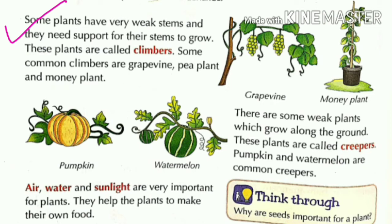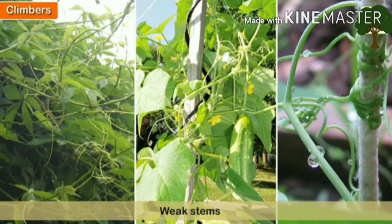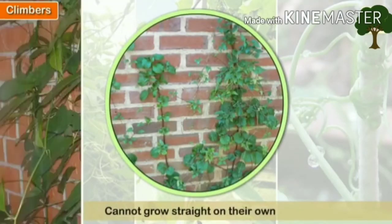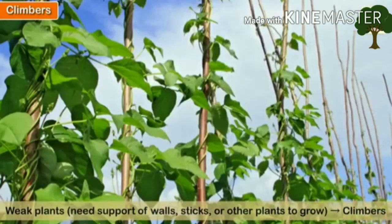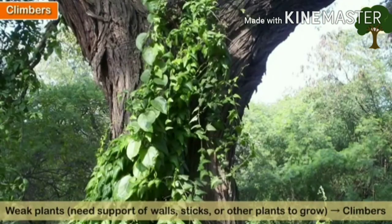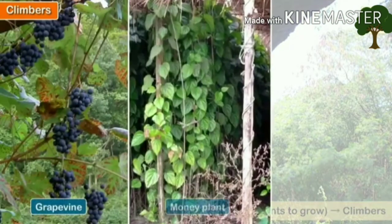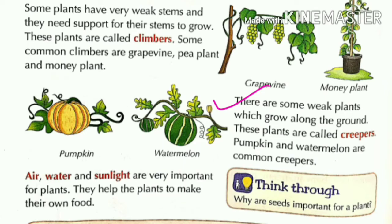Now let's read the next type of plant: climbers. Some plants have very weak stems and they need support for their stems to grow. These plants are called climbers. Some common climbers are grapevine, pea plant, and money plant. Climbers have weak stems, so they cannot grow straight on their own. They need the support of walls, sticks, or other plants to grow.